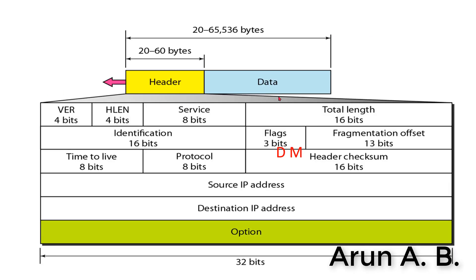In the previous class we discussed about the IPv4 datagram — the same is shown here. IPv4 has a header and data, and all the fields have been explained in the previous class. Now, as we are discussing only about fragmentation, we will be concentrating on the important fields. Fragmentation is the concept of dividing a huge fragment into small packets.